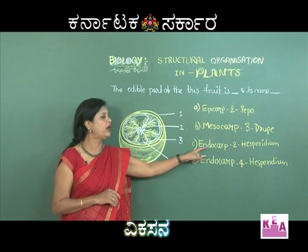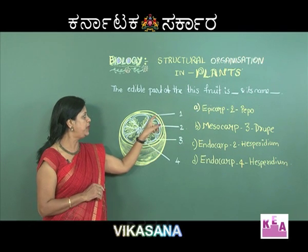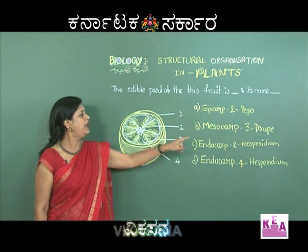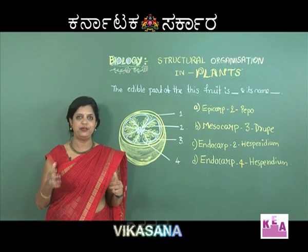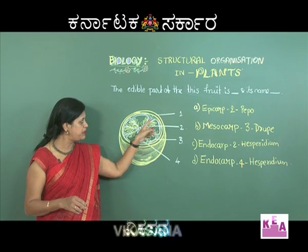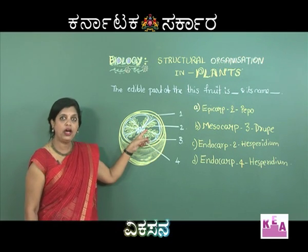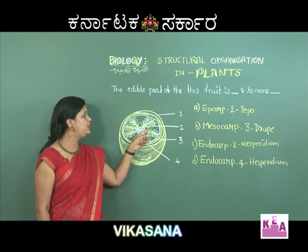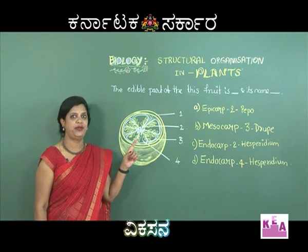The third option given is endocarp number two, and they call it hesperidium. The epicarp is the outer layer, the white part is the mesocarp, so number two must be the endocarp. Endocarp matching number two is correct, and the fruit type hesperidium is found in all citrus family members. In hesperidium, the epicarp is leathery, the mesocarp is papery and forms false locules, and the endocarp is drawn into juicy hair-like sacs filled with juice.